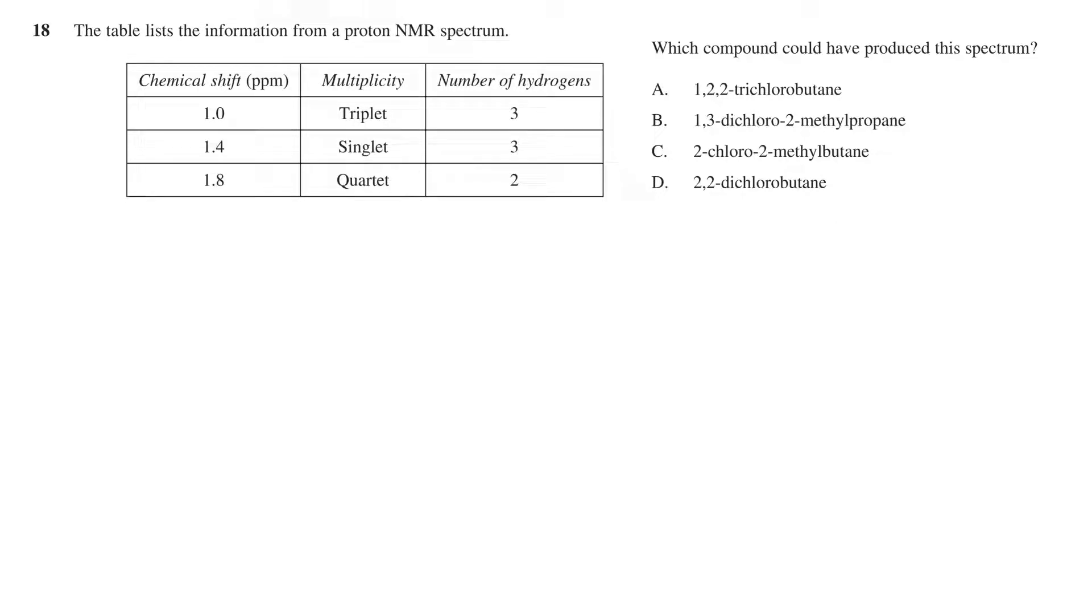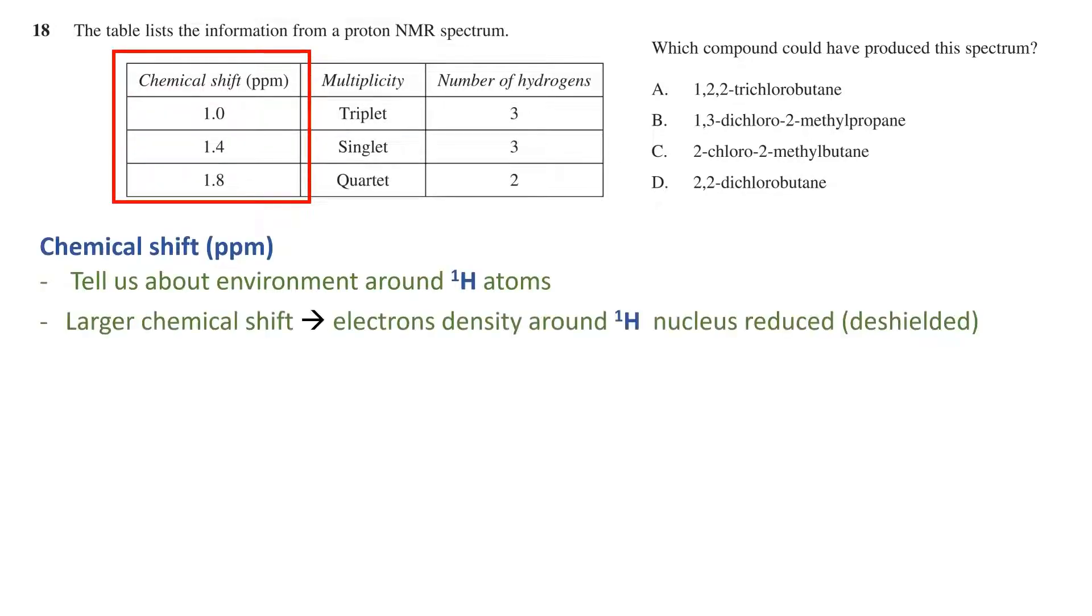The table describes three signals. The chemical shift reveals information about the hydrogen chemical environment, with a larger chemical shift implying that electron density has been pulled away from the hydrogen due to deshielding, probably due to electronegative groups being nearby.